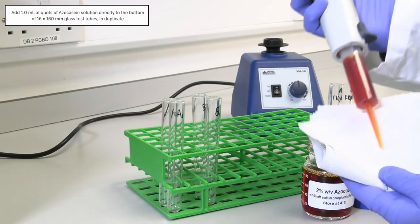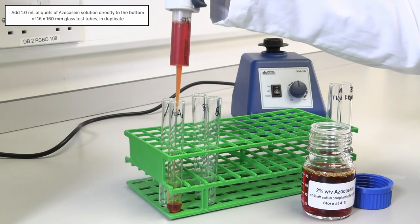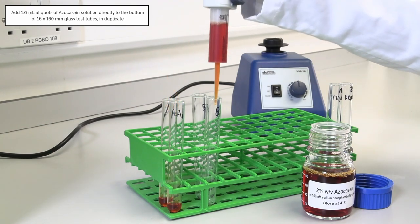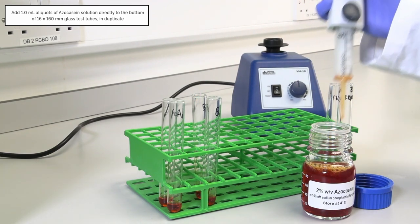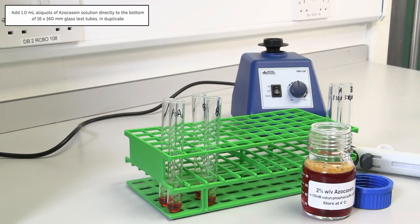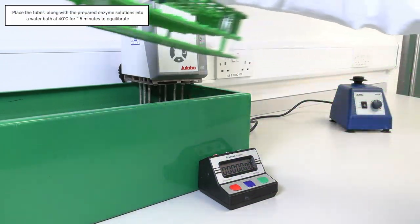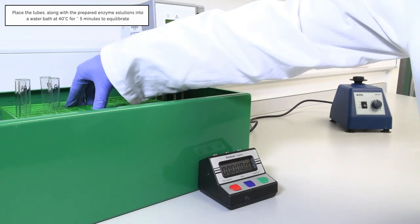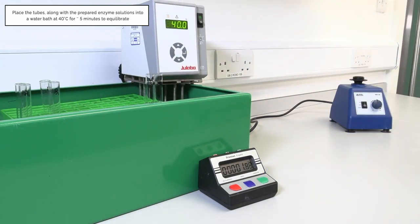As the azo casein substrate is quite viscous, use a positive displacement dispenser to transfer 1 ml aliquots of azo casein solution directly to the bottom of 16 by 160 mm glass test tubes in duplicate. Place the tubes along with the prepared enzyme solutions into a water bath at 40 degrees Celsius for approximately 5 minutes to equilibrate.